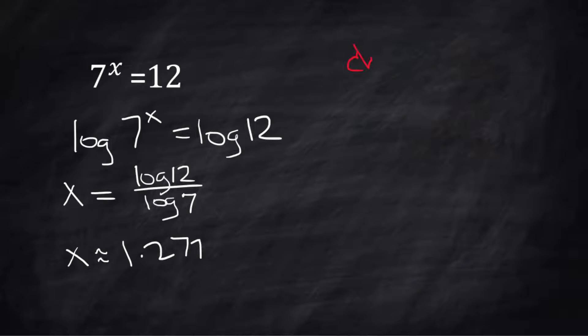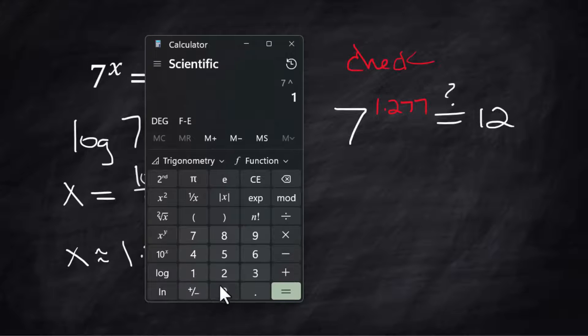If you're asked to do a check to make sure your answer is right, 7 raised to that power, we're wondering if that really does equal 12. 7^1.277 = 12.000, pretty close.